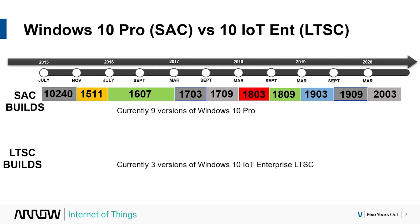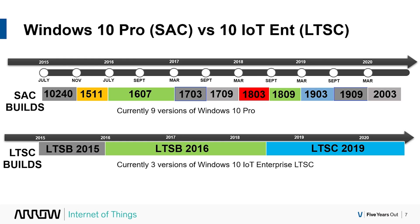Looking at a quick comparison of builds: SAC versus LTSC. The top numbers are Windows 10 Pro — there are currently nine versions of Windows 10 Pro, and you have to track when support starts and ends for each build. You'll also be forced to newer builds because you can't control that on your device. In comparison, the Long-Term Service Channel only has three versions and you get 10 years of support on each of those.